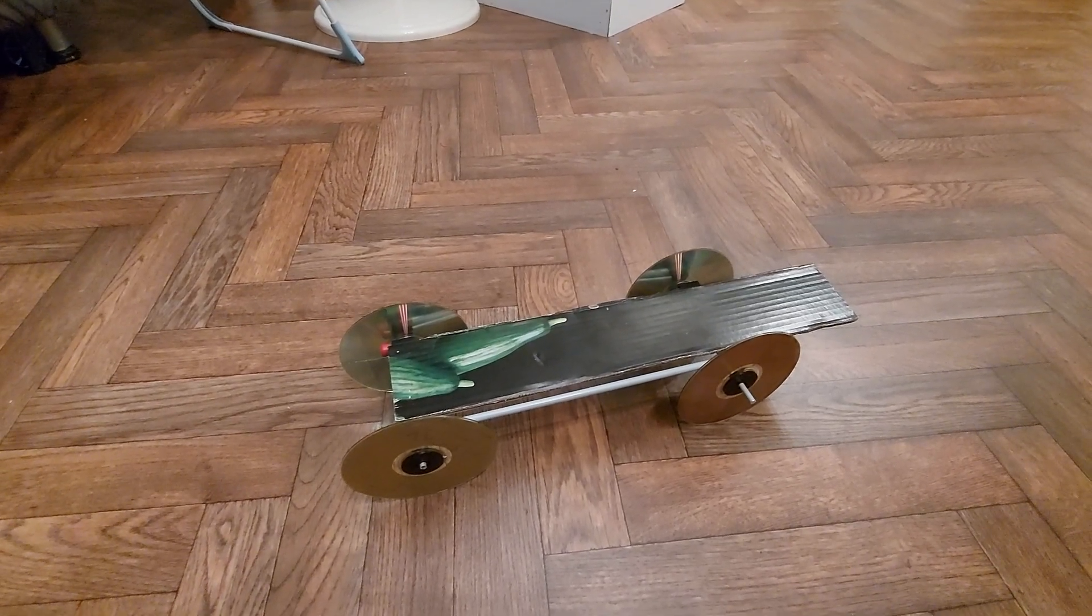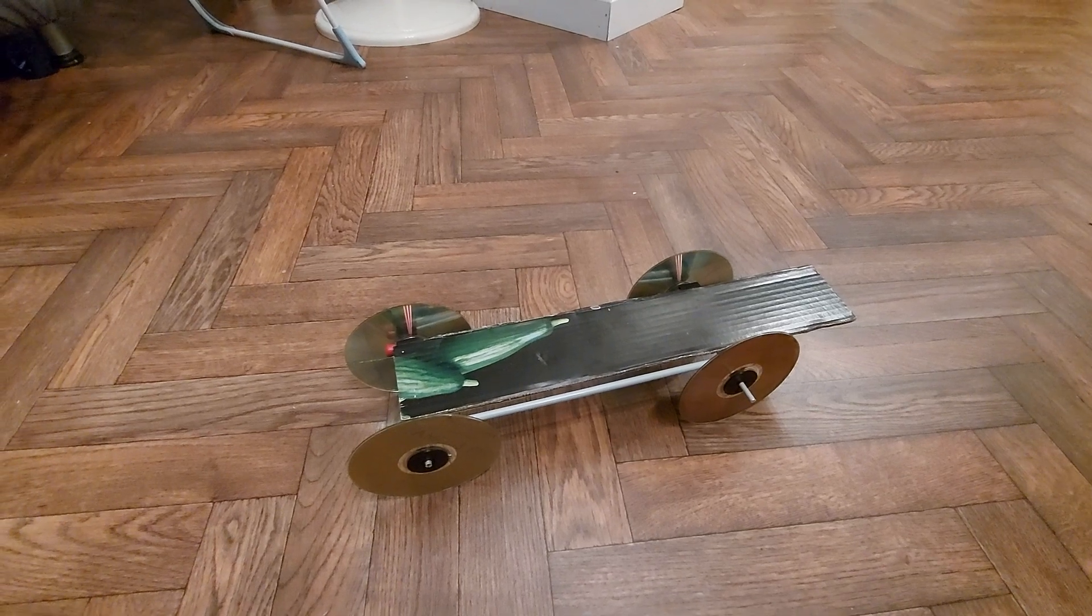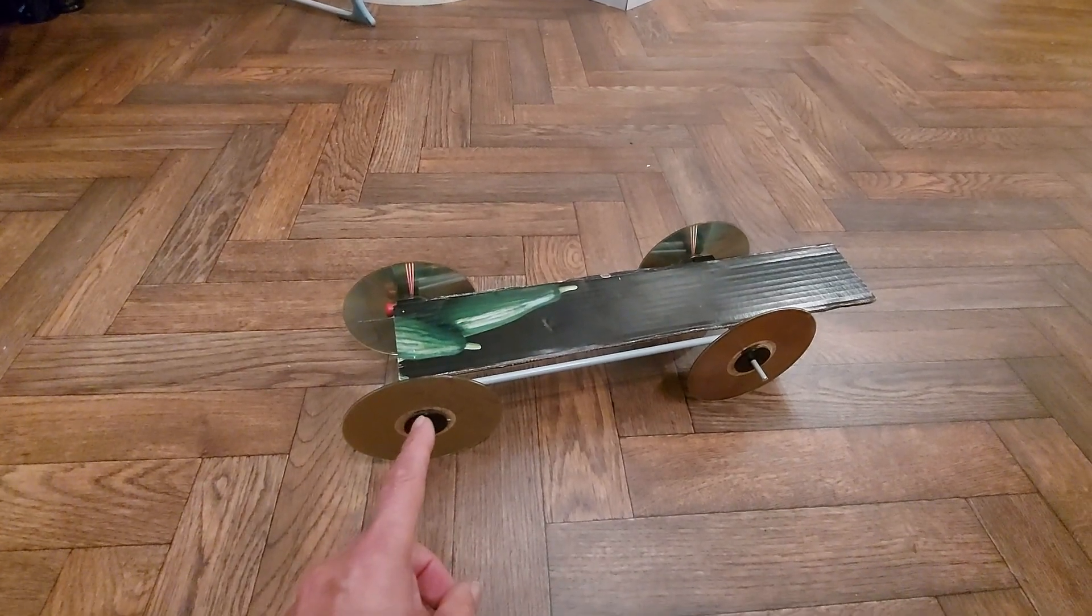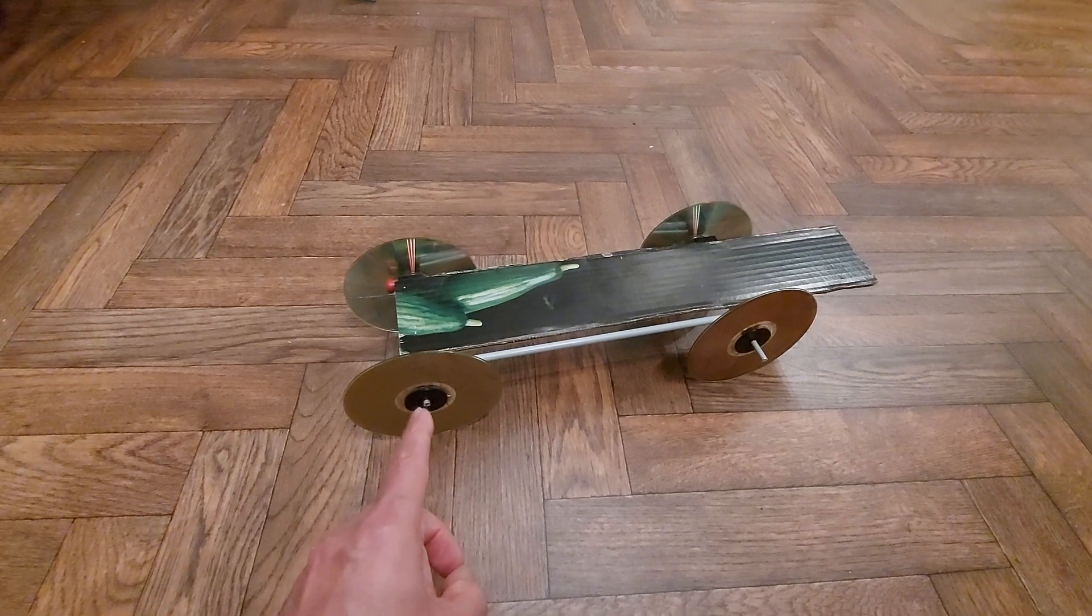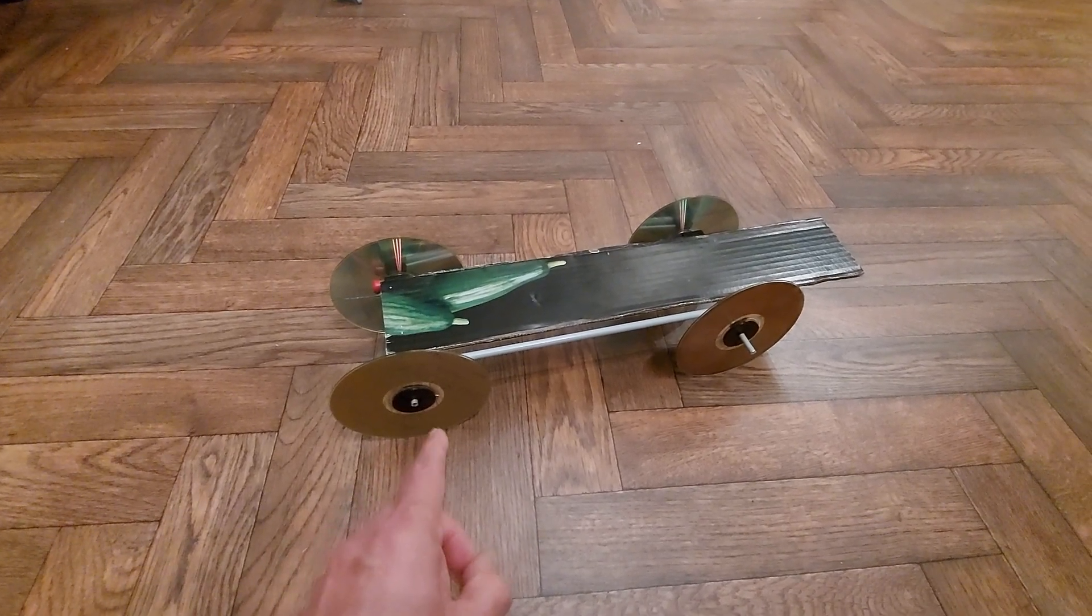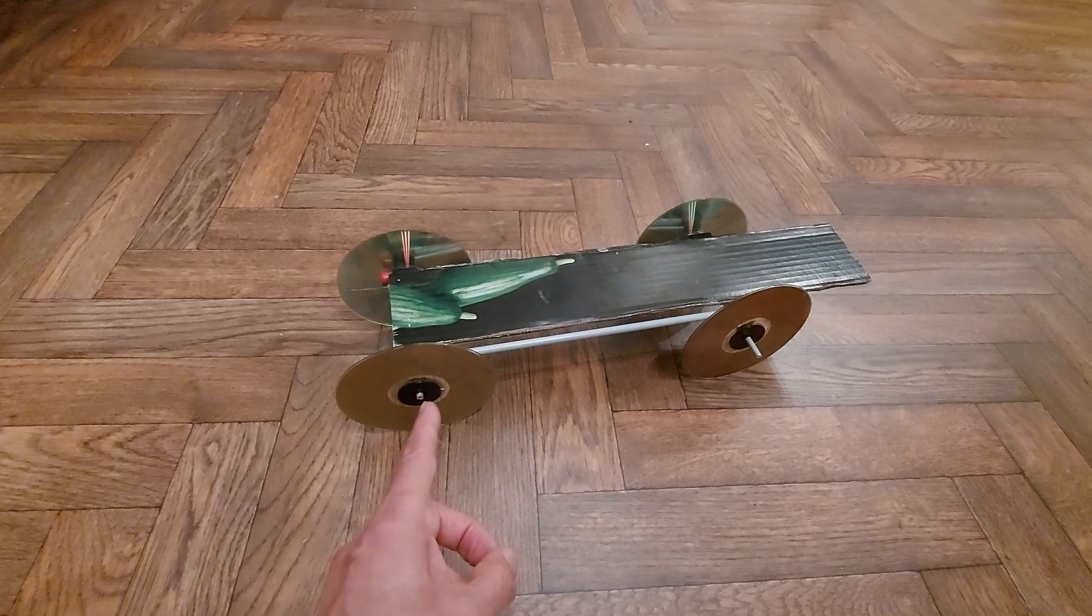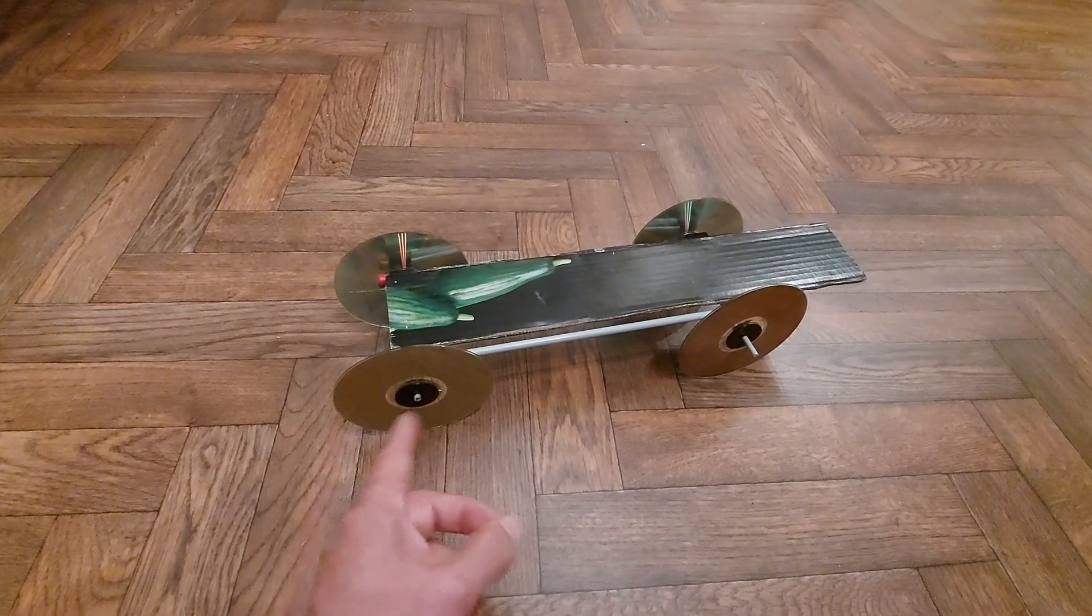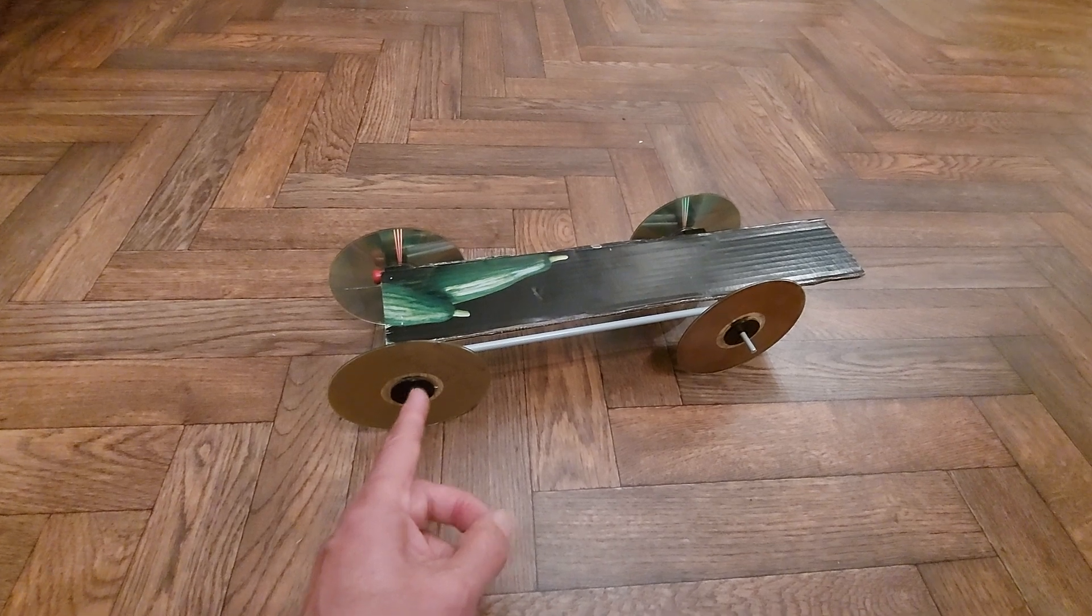The simple basics of making a fast rubber band powered car: the bigger the wheels, the faster it will go eventually. Smaller wheels will accelerate faster. It's just gearing, basically.